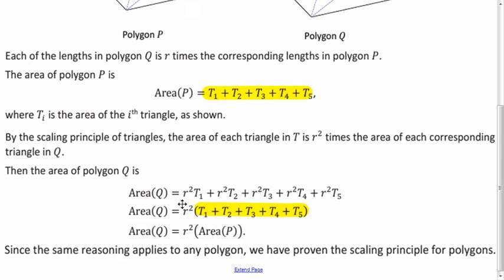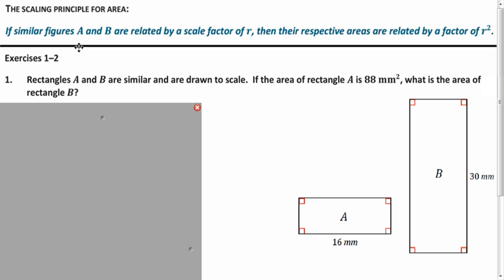It could have been any type of polygon. We didn't have to just have five triangles. So this holds for any type of polygon. And as it turns out, this also holds for any type of figure. So the scaling principle for area also holds for figures such as ellipses and circles. The only difference here is that we replace the word polygons with figures.